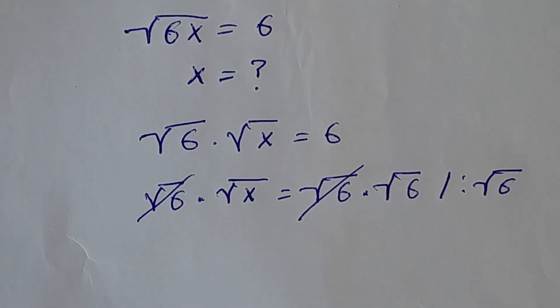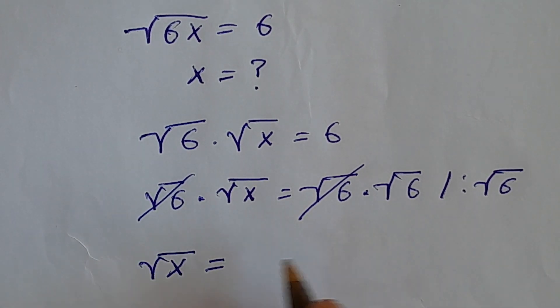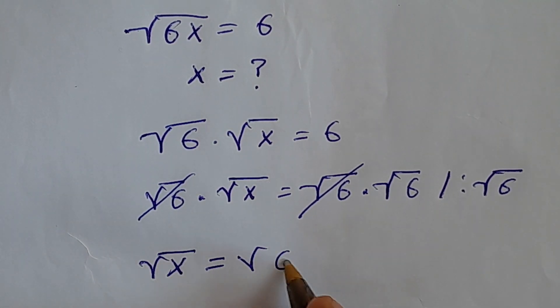Now if I divide both sides by square root of 6, this will cancel out and square root of x equals square root of 6.